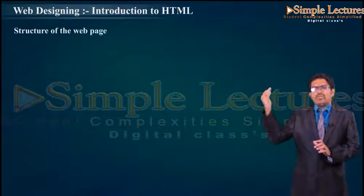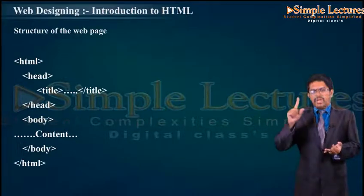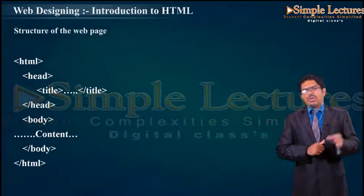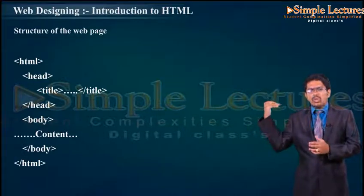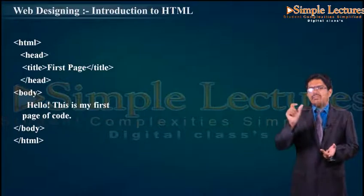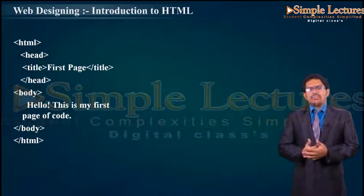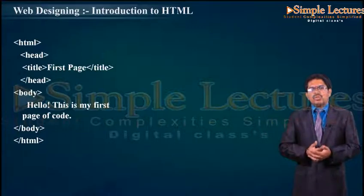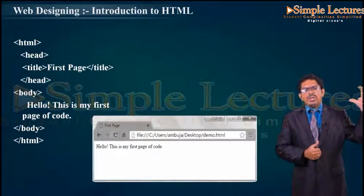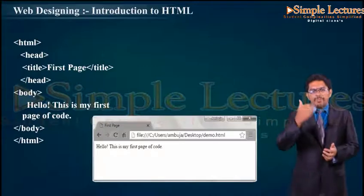Now let's go to the structure of an HTML page. HTML consists of head and body. Head consists of title — whenever we start the head tag, it should be closed. Body consists of contents and should also be closed. At last we close the HTML tag. Example: &lt;HTML&gt;, &lt;head&gt;, &lt;title&gt; First Page &lt;/title&gt;, &lt;/head&gt;, &lt;body&gt; Hello this is my first page &lt;/body&gt;, &lt;/HTML&gt;. When we run the program, it should be executed in Internet Explorer, and the output appears.